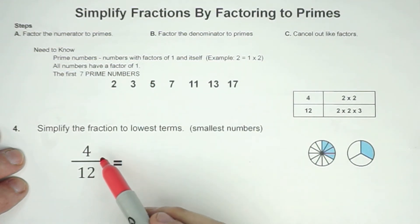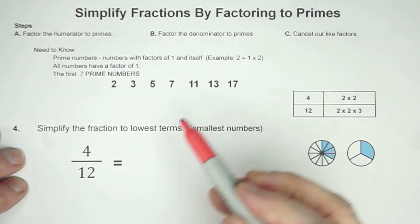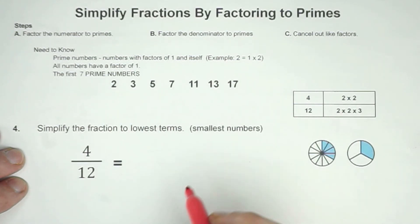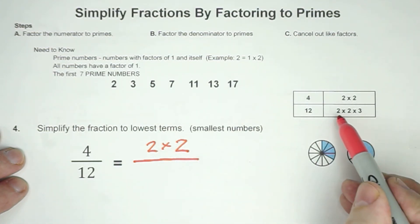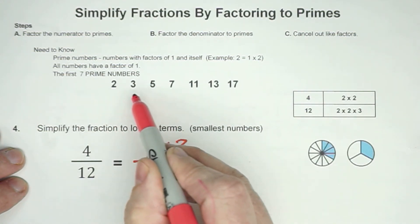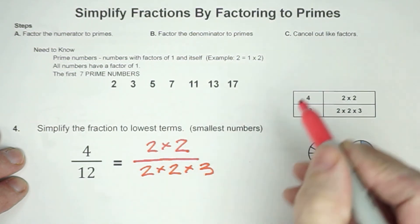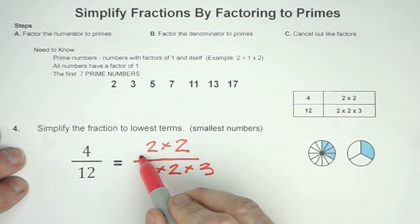Let's try one more. 4 twelfths, we're going to simplify using our factoring strategy. 4 would just be 2 times 2. Notice that 2 are prime numbers. 12 would be 2 times 2 is 4 times 3. Once again, we are using all primes. Now we're going to cancel out. I'm seeing that 2 times 2 cancel out.